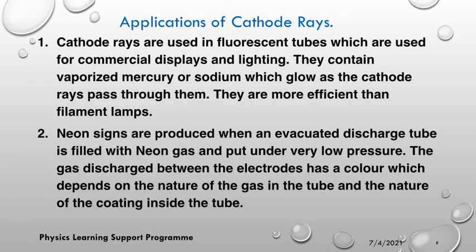Let's look at the applications of cathode rays. Cathode rays are used in fluorescent tubes — as mentioned, they fluoresce, so they are used in fluorescent tubes for commercial displays and lighting. They contain vaporized mercury or sodium, which glow as the cathode rays pass through them, and they are more efficient than filament lamps. They are also used in neon signs, which are produced when an evacuated discharge tube is filled with neon gas and put under very low pressure. The gas between the electrodes has a color which depends on the nature of the gas in the tube.